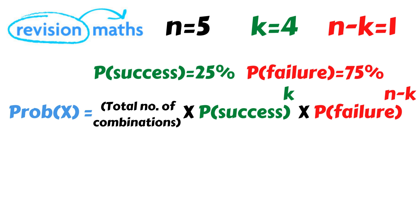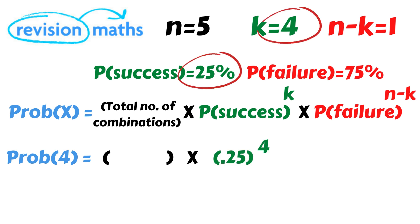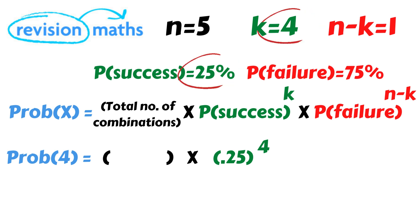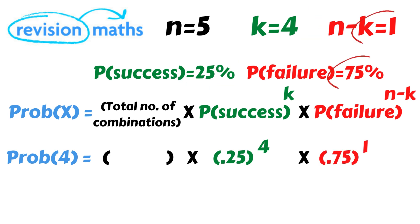Now let's put into the formula the figures we already know. The number of successes K equals four. The probability of success is twenty-five percent, so we put in 0.25 raised to the power of four. The probability of failure is seventy-five percent, so we put in 0.75. N minus K equals one, as the spectator only fails once. We will return to the number of combinations shortly.